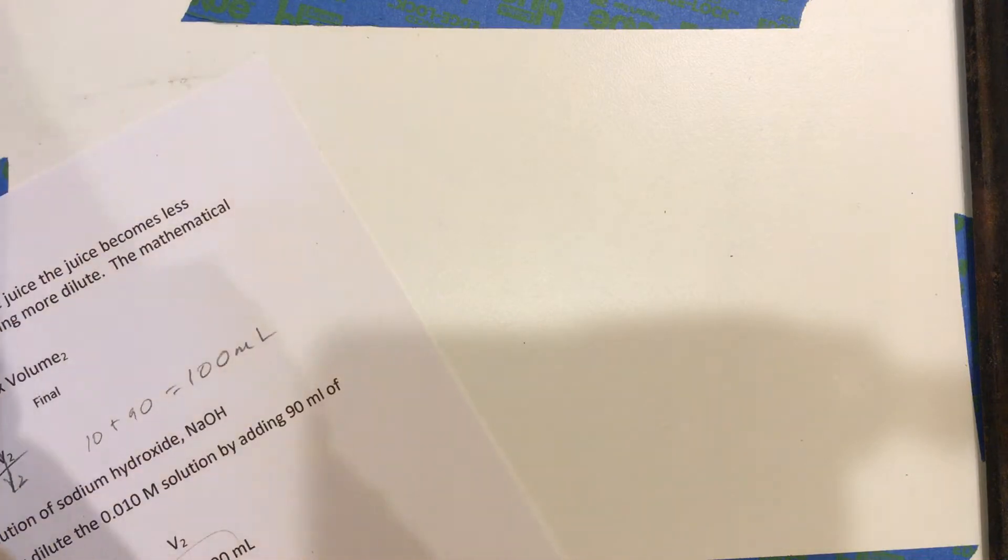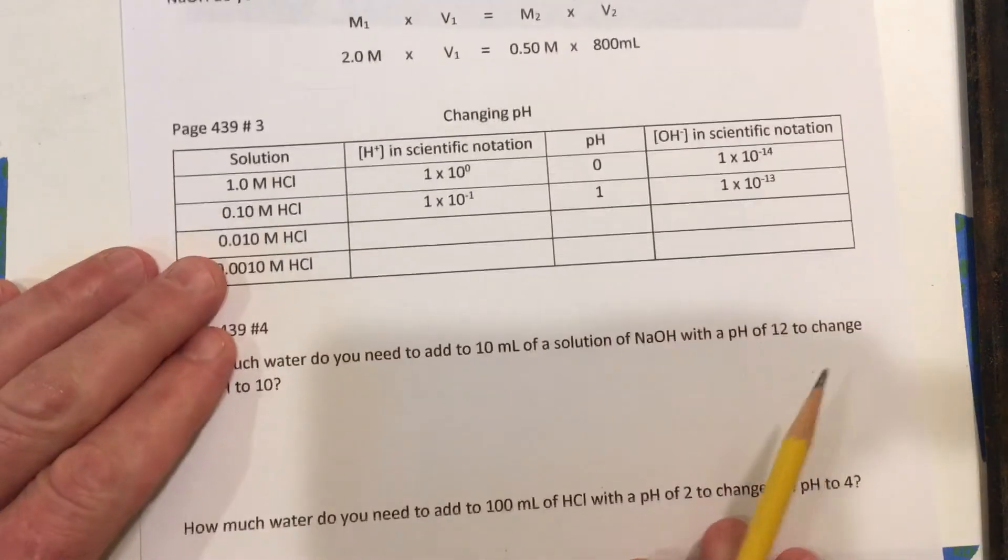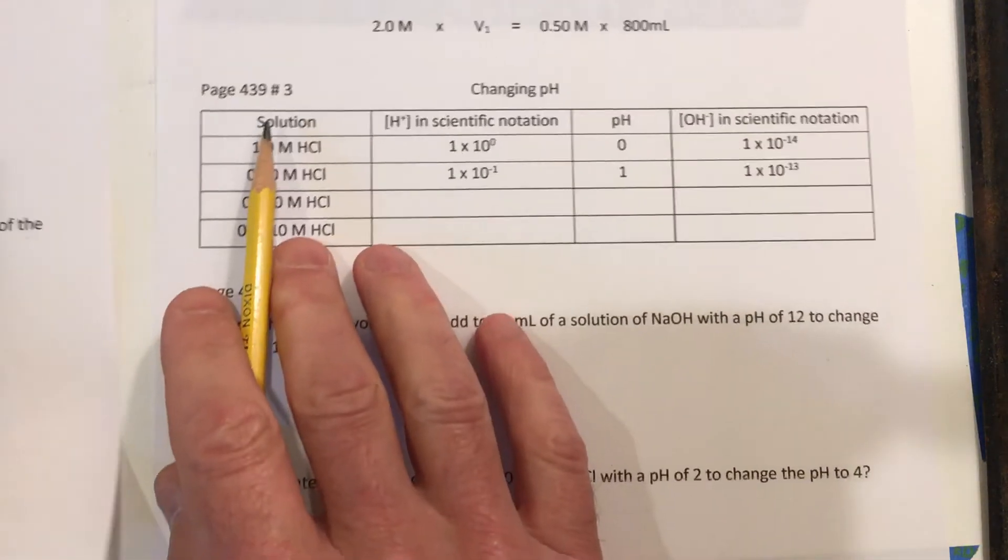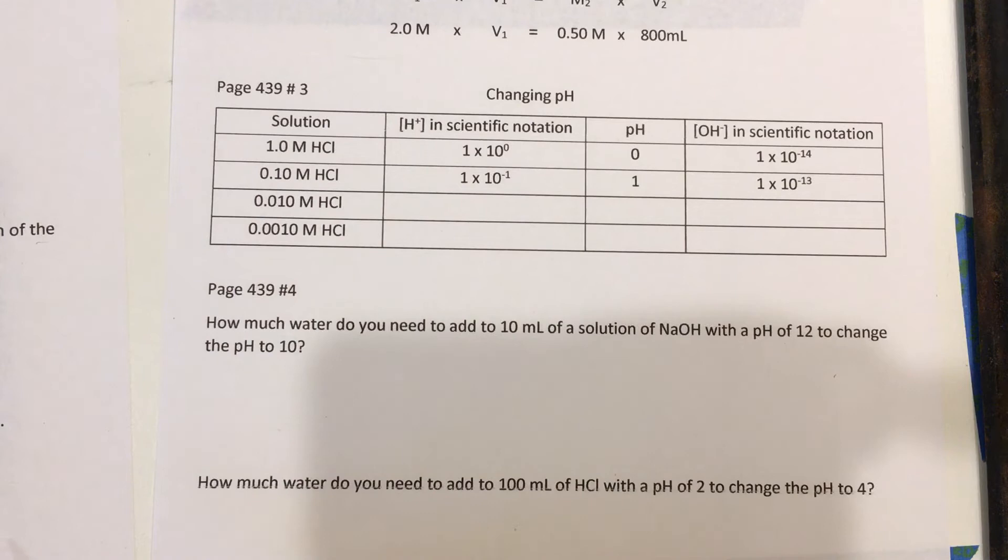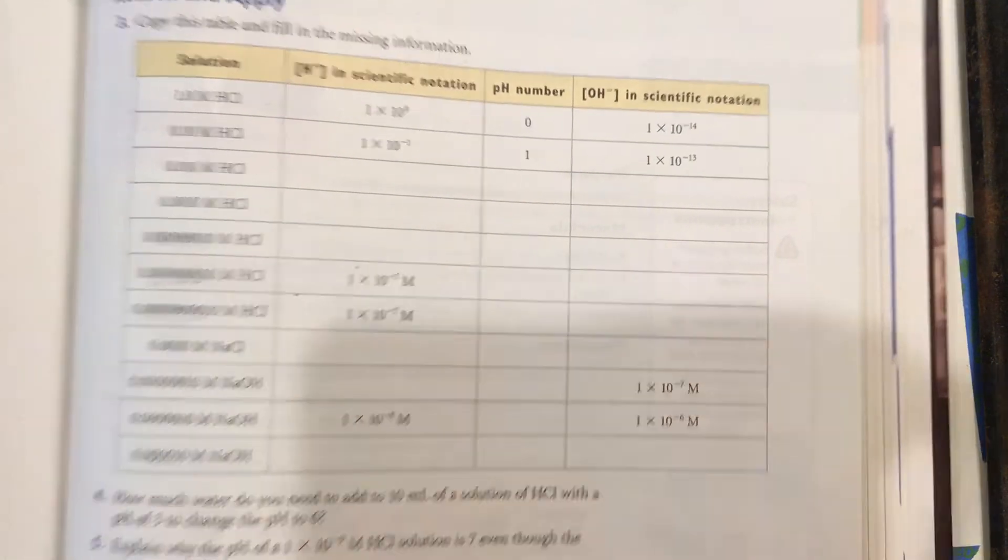I better hurry through these. The next page. Right here. I'll come back to this one later if we have time. I want to get to this problem here. This is page 439, number 3. This is part of the homework. And this is the table right here in your book. So I'm going to be answering those first two right there.